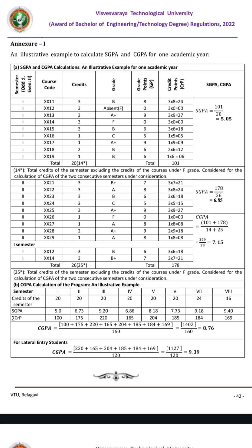Divided by the total number of credits for all eight semesters — that is for four years — this is how you calculate the CGPA. In the same way, for lateral entry students, it should be calculated only for six semesters, that is from third semester through third, fourth, fifth, sixth, seventh, and eighth. Thank you.